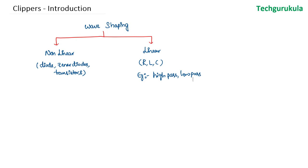So while coming to the non-linear wave shaping circuits, we have clippers. Clippers as the name suggests are used to clip and remove unwanted portion of a waveform. And of course, as it is stated, clippers are non-linear wave shaping circuits which are used to remove or cut or clip unwanted portion of a waveform.